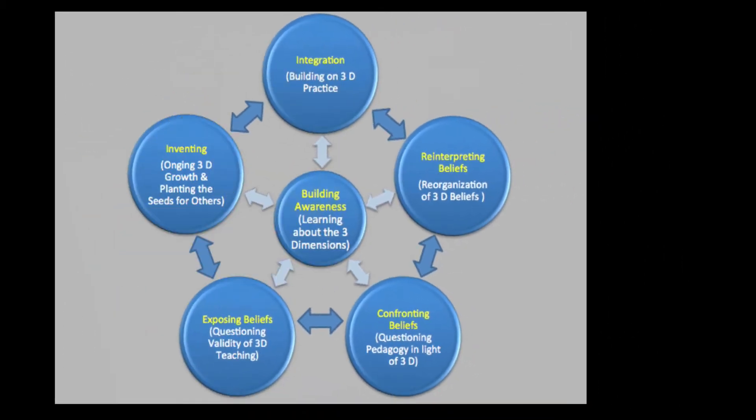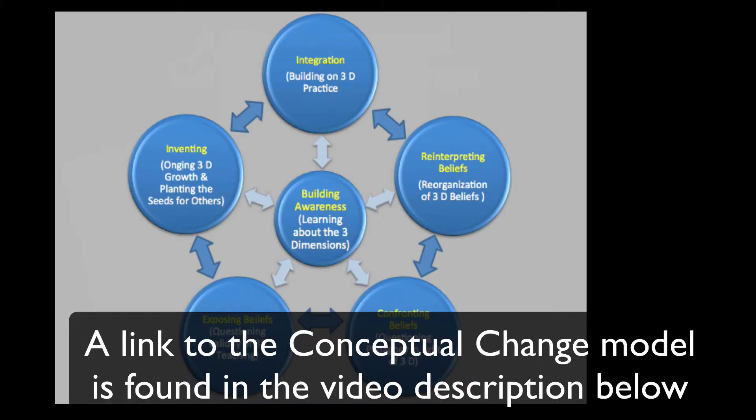One of the things that I have come to believe is that conceptual change takes place along a continuum. This is one example of a conceptual change model, and it's designed in such a way to be illustrated as a cycle as opposed to a linear model. As we encounter conceptual change ourselves as adults, I think we see ourselves moving back and forth in a cycle process as opposed to a linear process.